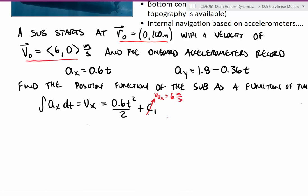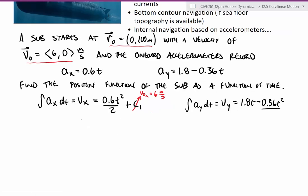We can do the same thing for our acceleration in the y direction. The integral of a sub y dt is equal to the v sub y function. And so that one we end up with 1.8 times t minus 0.36t squared divided by 2, and then we need to add in again an integration constant, c2. Now this c2, there was no initial velocity in the y direction, and so this one will work out to be 0.